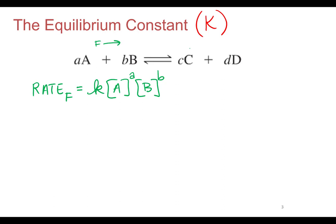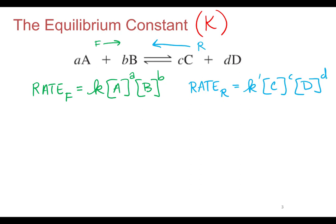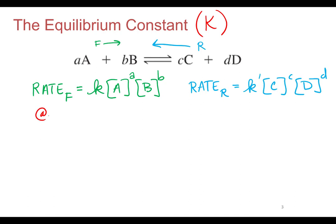The reverse reaction is C + D going to A + B. We also have a rate law for that reaction: rate of the reverse equals a different rate constant K′, times the concentration of C raised to c, times the concentration of D raised to d. At equilibrium they would be equal to each other, because that's what equilibrium is — rate of the forward equals rate of the reverse.